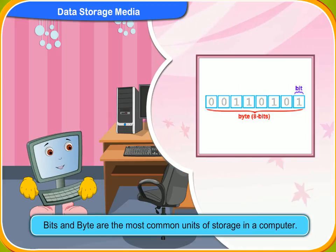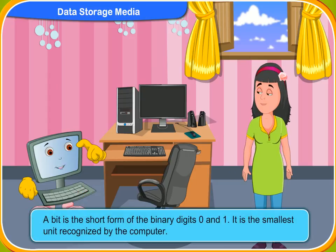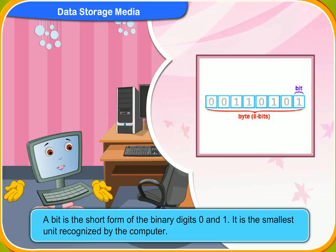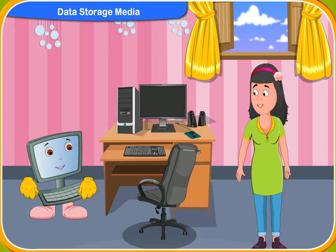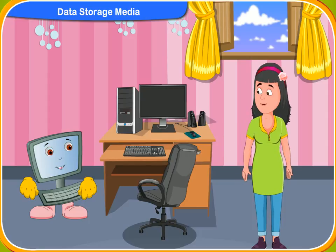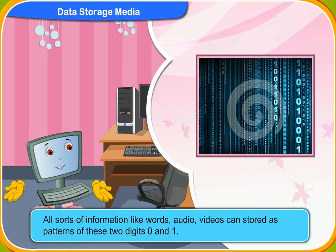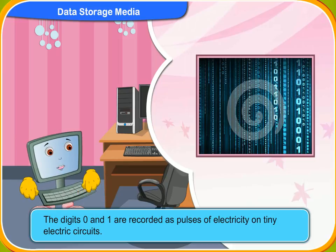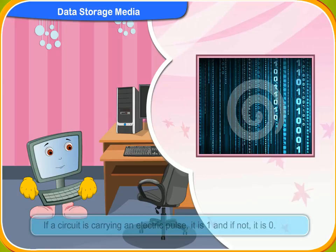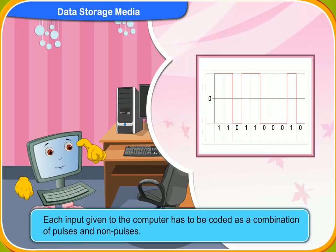Bits and bytes are the most common units of storage in a computer. Tell me more about bits and bytes. A bit is actually the short form of the binary digits 0 and 1. It is the smallest unit recognized by the computer. All sorts of information like words, audio, and video can be stored as patterns of these two digits 0 and 1. The digits 0 and 1 are recorded as pulses of electricity on tiny electric circuits. If a circuit is carrying an electric pulse, it is 1, and if not, it is 0. Each input given to the computer has to be coded as a combination of pulses and non-pulses.